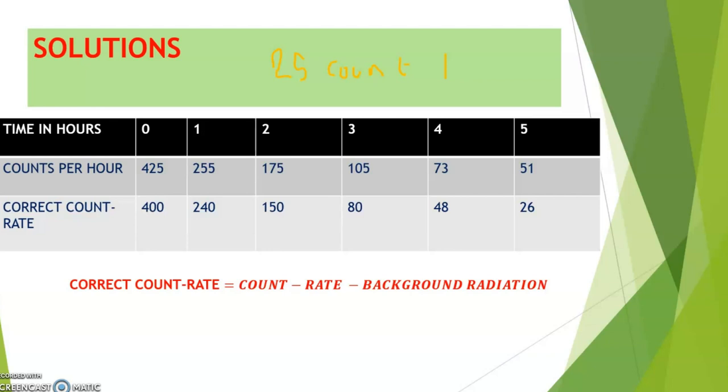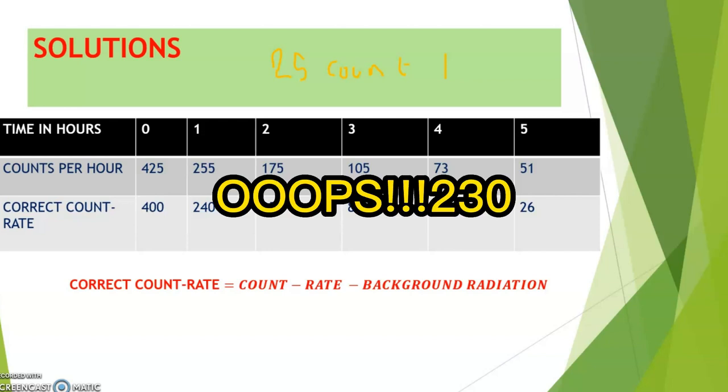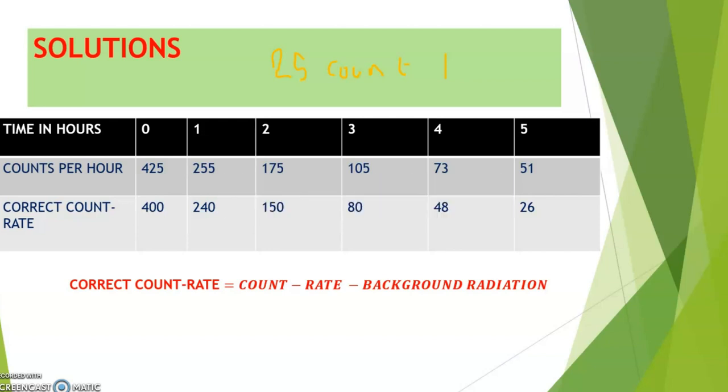All right. Then we have 175 minus 25, we have 150. Then, 105 minus 25. This has always to be removed from the recorded count rate, because this is the background radiation. 73 minus 25, we have 48. Then, 51 minus 25, we have 26. So, that's how we do it.